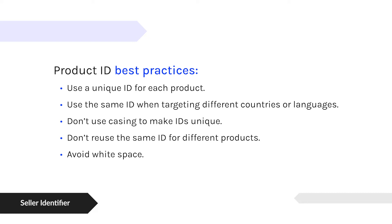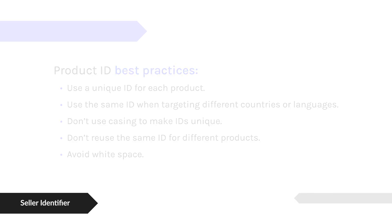There are also some formatting items: the SKU shouldn't be very long — less than 50 characters — and they recommend avoiding white space. Often you'll see SKUs that have hyphens to segment different parts, or it's just a string of letters and numbers.